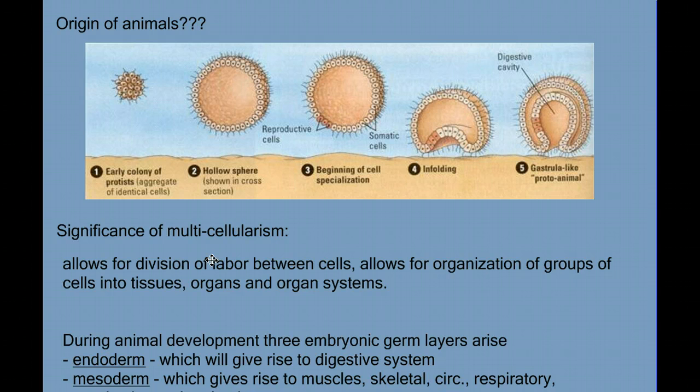Eventually, we see the specialized cell types form tissues, then complex organs, and then organ systems.